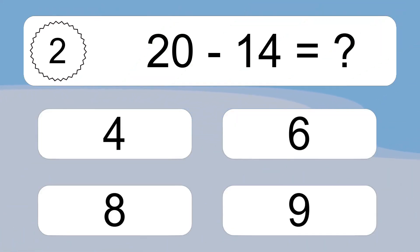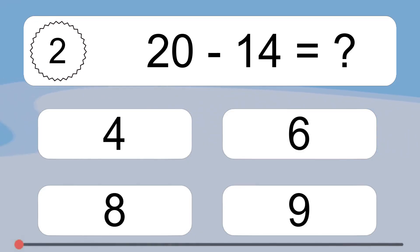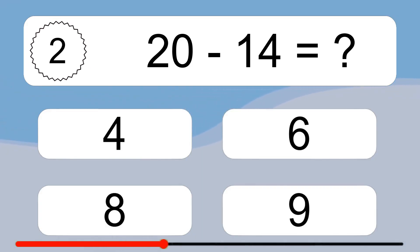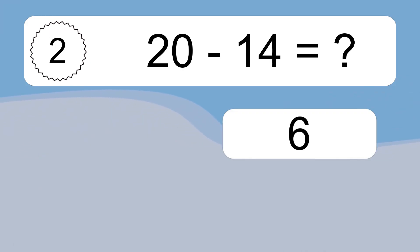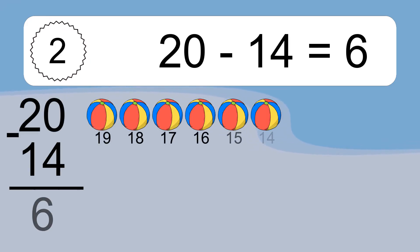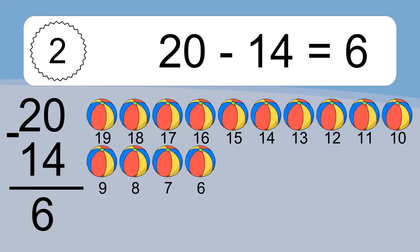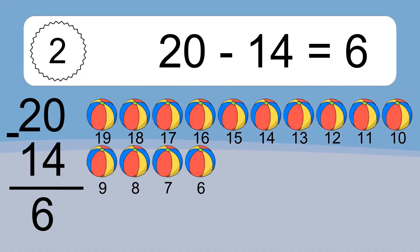20 minus 14 equals what? 20 minus 14 equals 6. Let's count it: 19, 18, 17, 16, 15, 14, 13, 12, 11, 10, 9, 8, 7, 6.